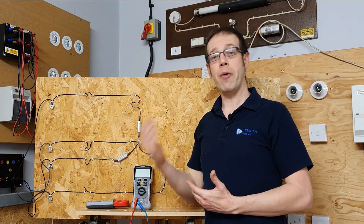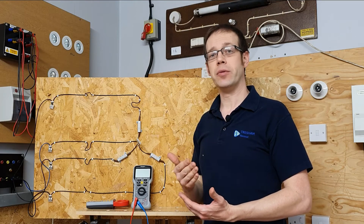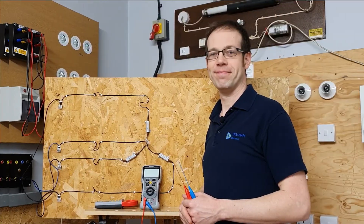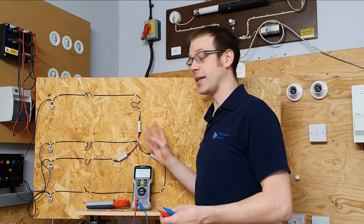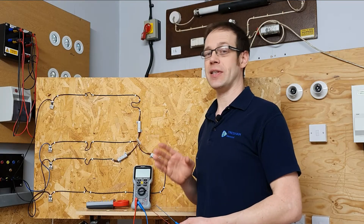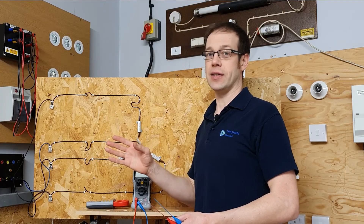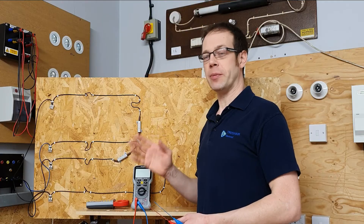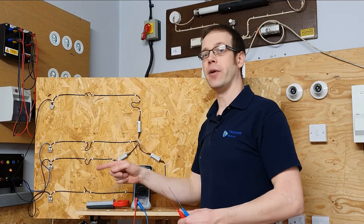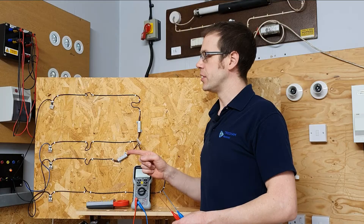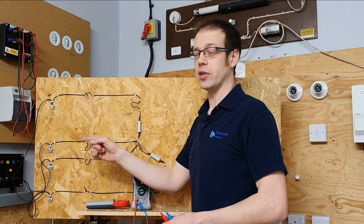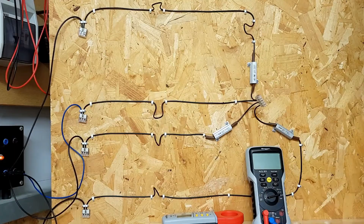We're going to power up our star connected load, measure the voltages and currents, and then show the mathematical relationships between them. We'll connect to the three-phase supply just off screen. We're working under controlled conditions — a three-phase system is even more dangerous than single-phase, so please do not attempt to repeat this experiment yourself. With electricity now flowing into our three-phase load, we'll first measure the line voltage between L1 and L2.